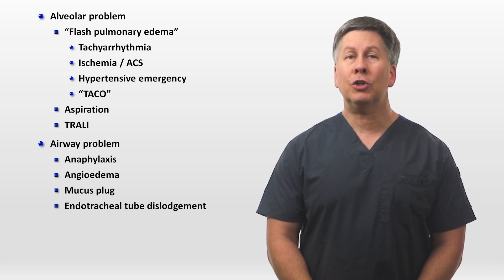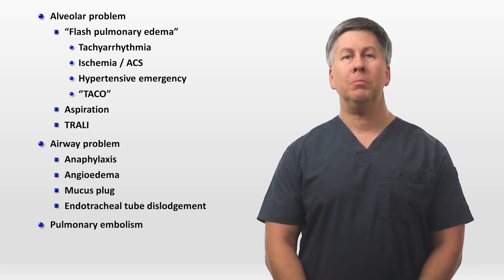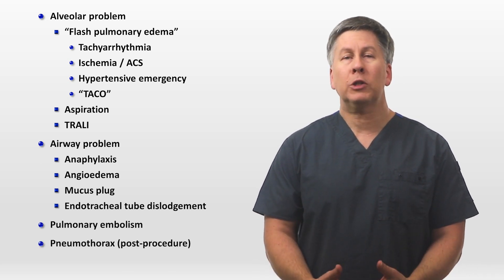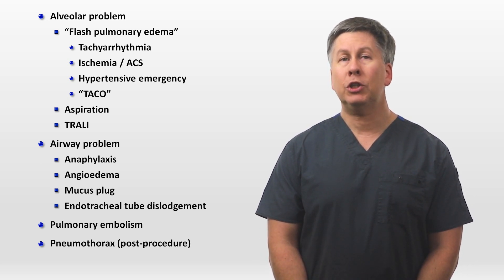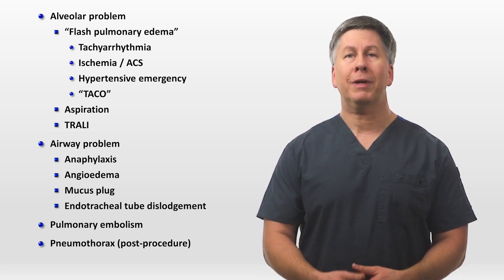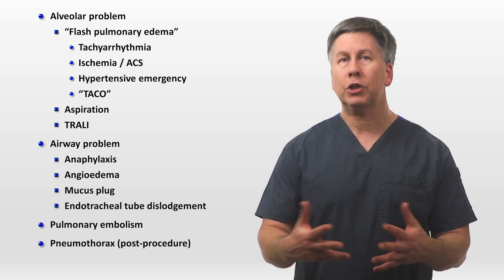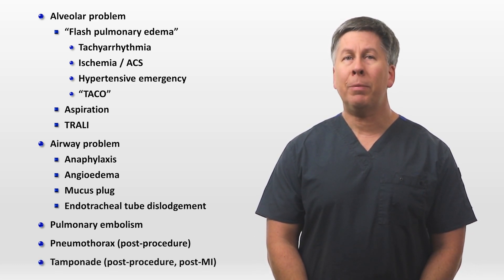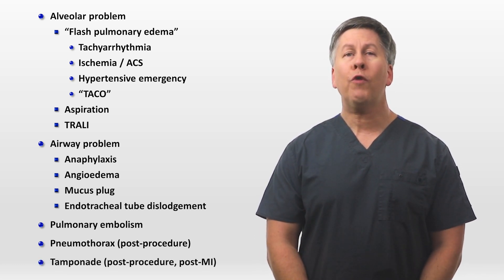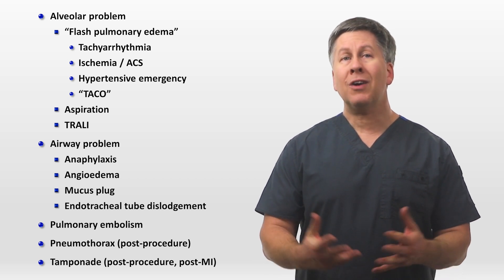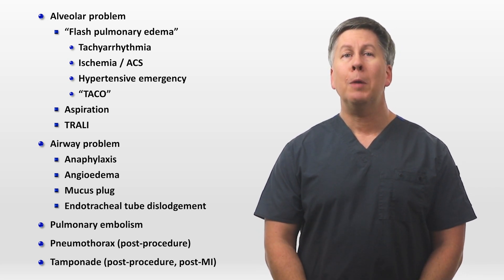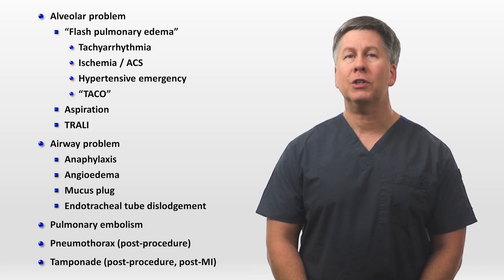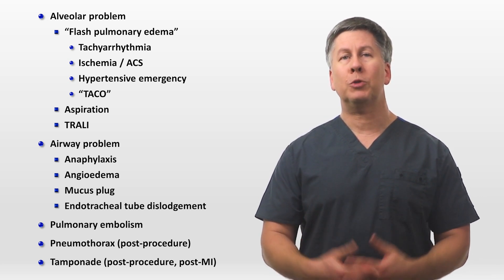The remaining etiologies include a pulmonary embolism, a pneumothorax — which in the hospital is almost always within 24 hours of an intrathoracic procedure or in someone on mechanical ventilation with excessive positive pressure — and cardiac tamponade, which may be post-procedural or from a free wall rupture following an MI. Such post-infarct wall ruptures were once a common mechanism of death, but have become relatively rare in the 21st century with improved management of infarcts.